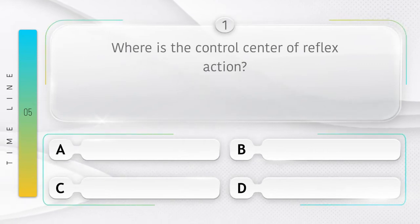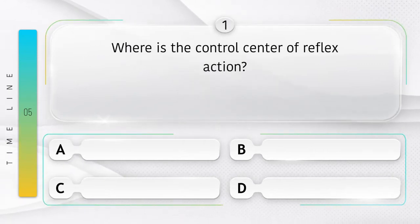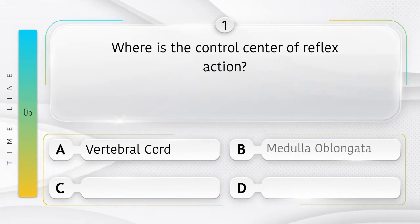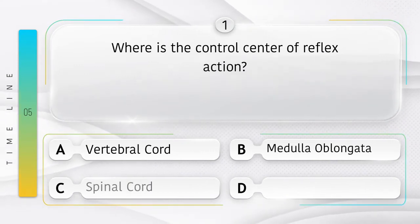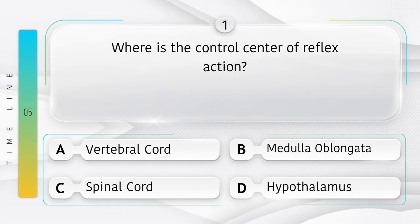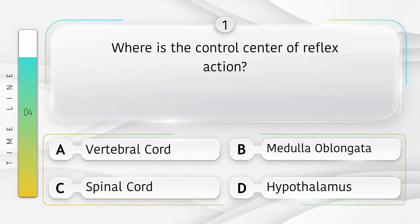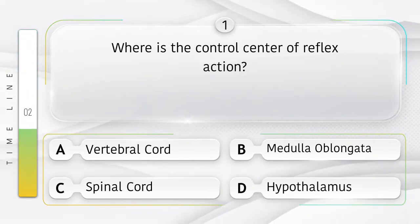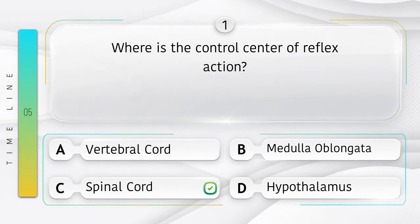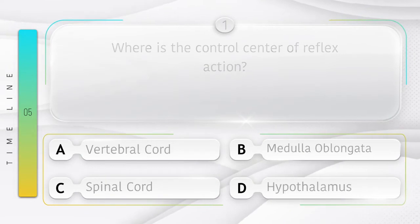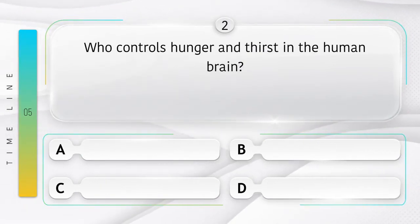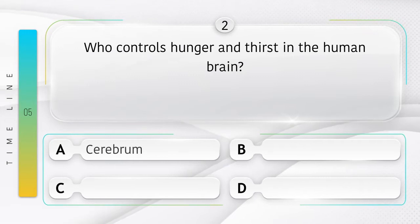Where is the control center of reflex action? Option A: vertebral cord, B: medulla oblongata, C: spinal cord, D: hypothalamus. Answer is option C: spinal cord.